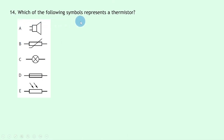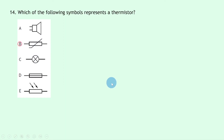Question 14 asks which symbol represents a thermistor. A thermistor is a temperature-dependent resistor; it looks like a resistor rectangle with an arrow-like line through it. The answer is B. The other options are A: loudspeaker, C: bulb/lamp, D: fuse, and E: LDR (light dependent resistor).